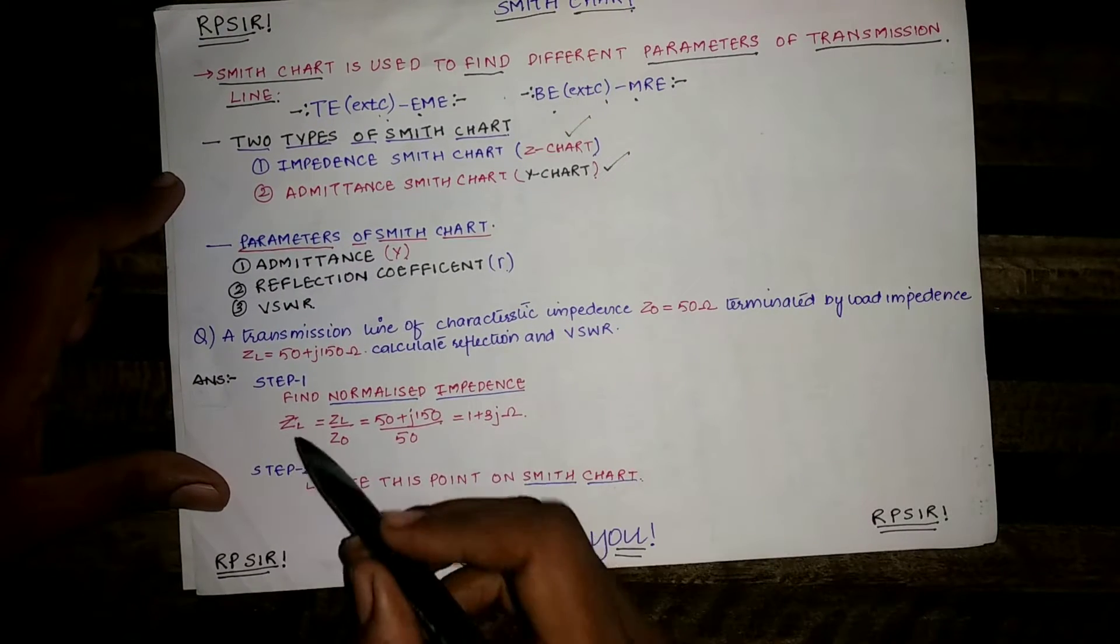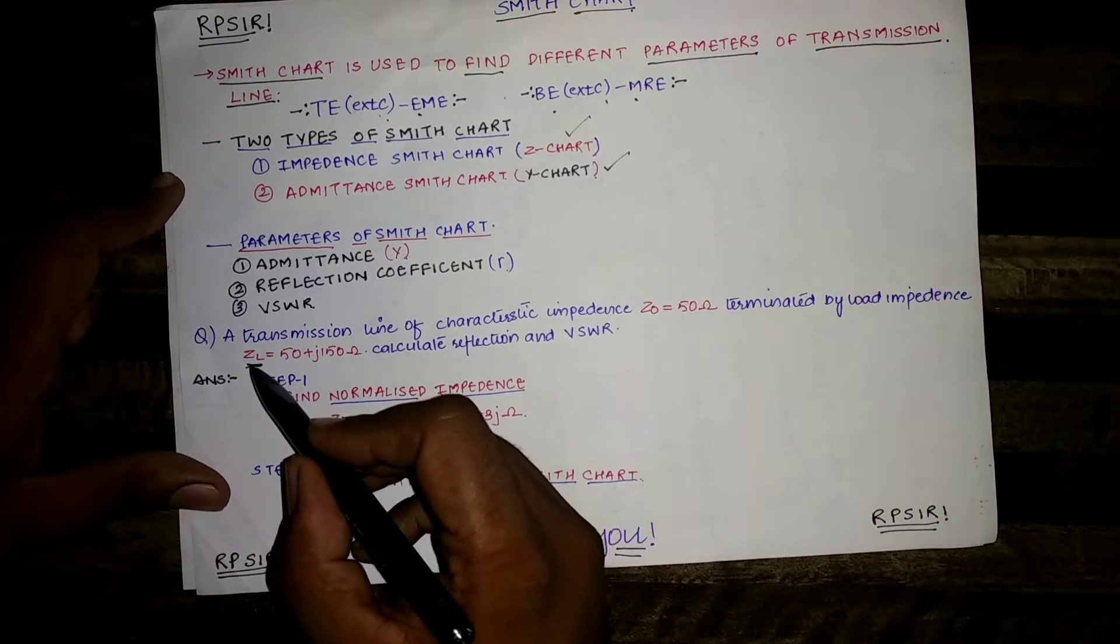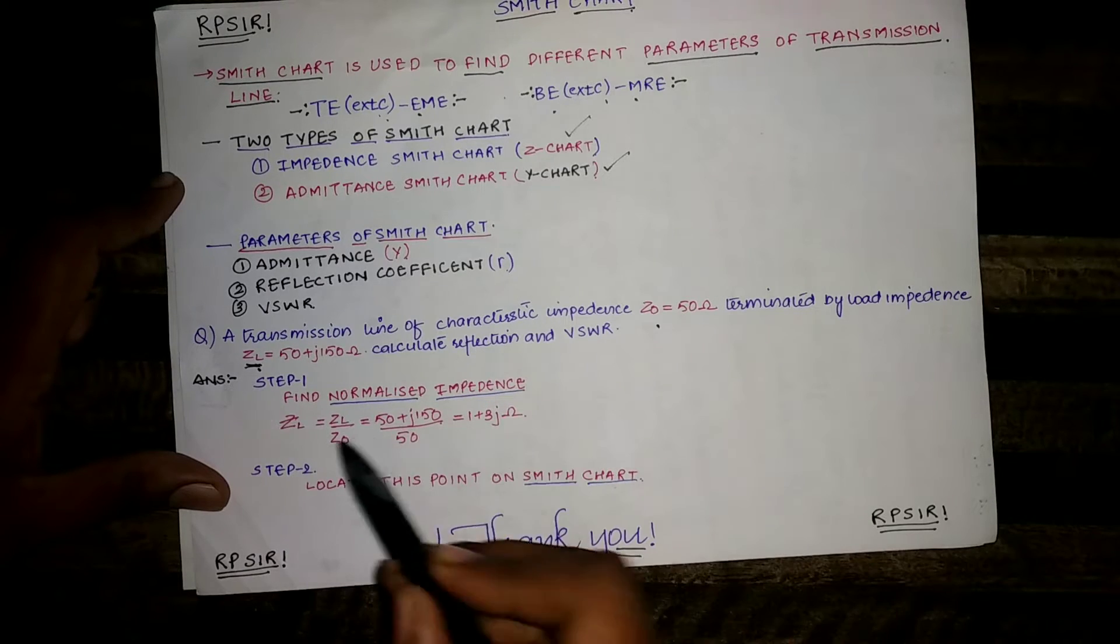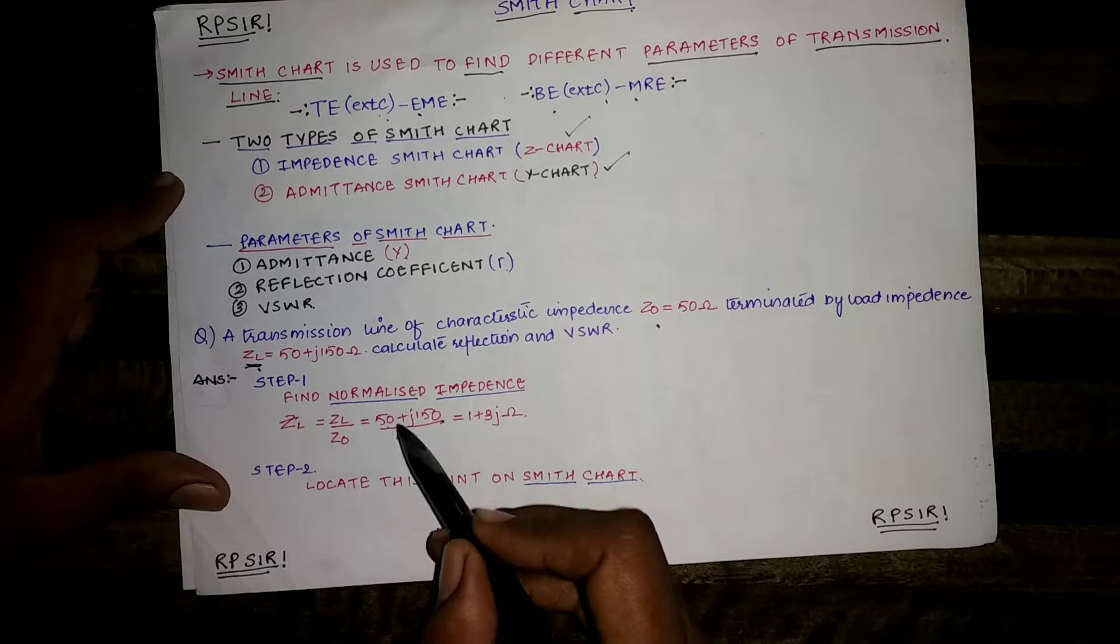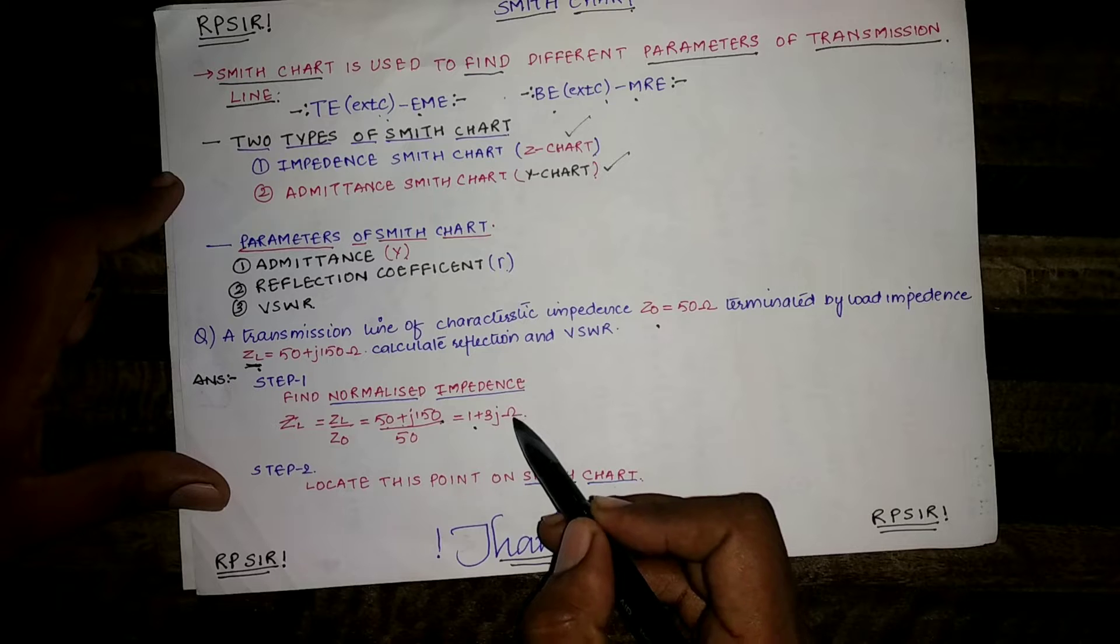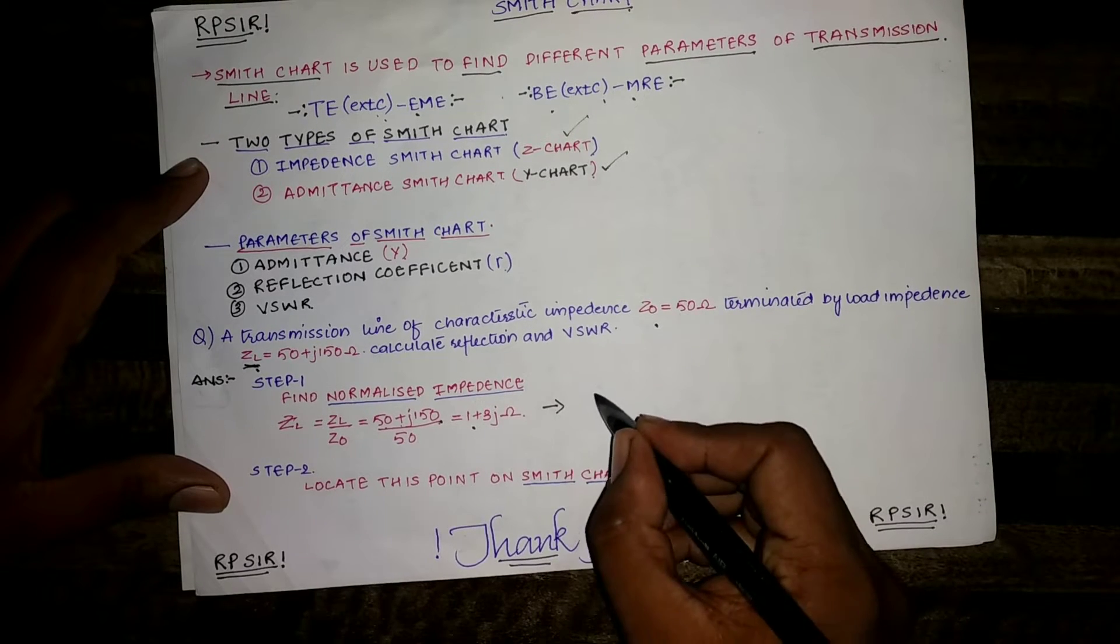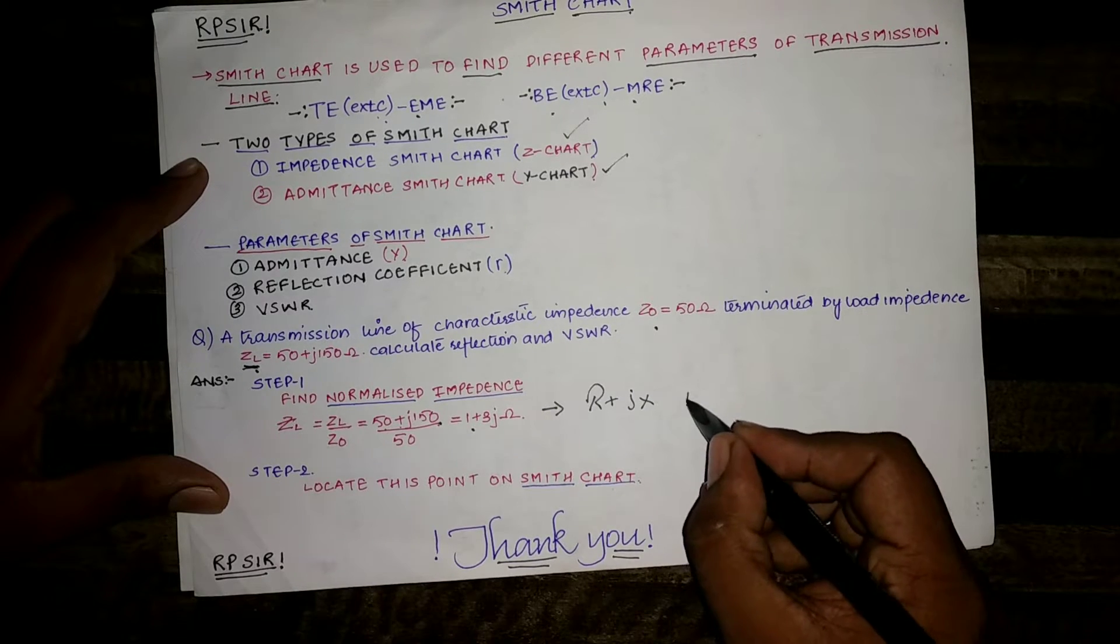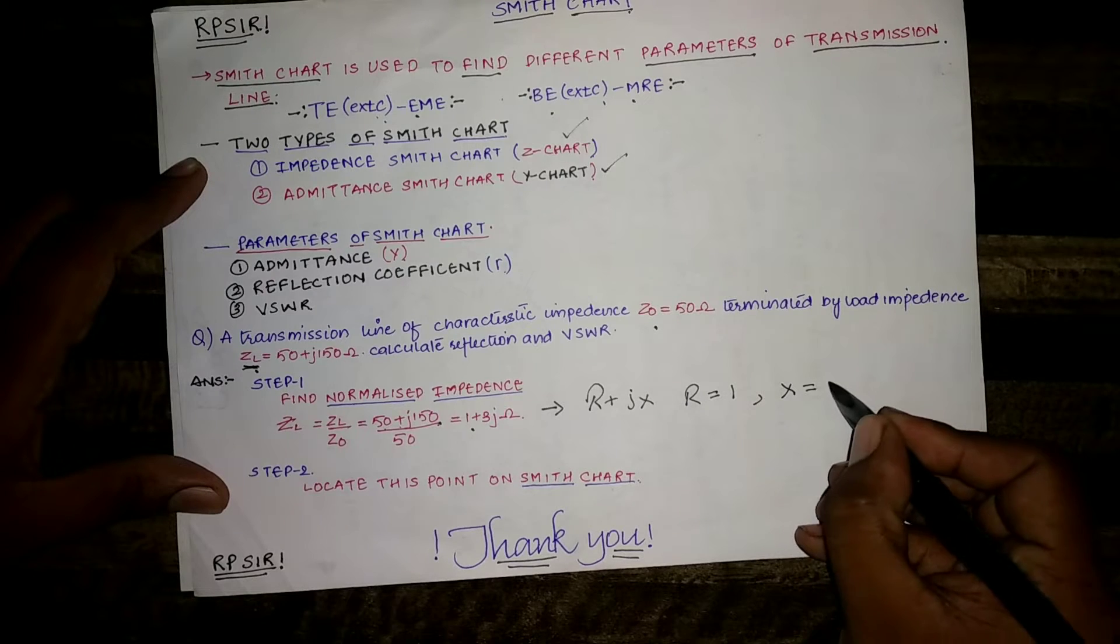Step number one. Step number one will always be to normalize this ZL. How to normalize this ZL? Divide this ZL by given Z0. ZL is given 50 plus J 150 and Z0 is 50. Dividing ZL by 50 is 1, 150 by 50 is 3. 1 plus 3J ohm. This is in the form of R plus Jx. It means I have got R equal to 1 and x equals to 3.